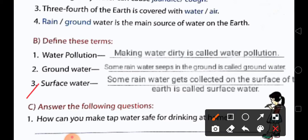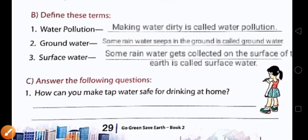Number three: surface water. Some rain water gets collected on the surface of the earth. It is called surface water. Now we will come to the next one.